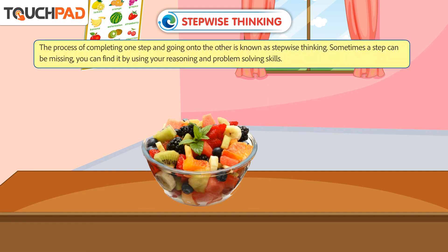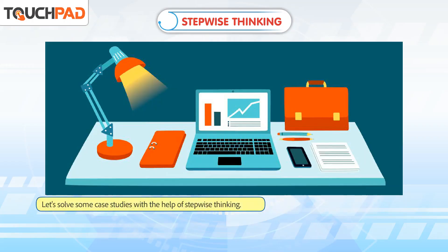The process of completing one step and going on to the other is known as stepwise thinking. Sometimes a step can be missing. You can find it by using your reasoning and problem solving skills. Let's solve some case studies with the help of stepwise thinking.